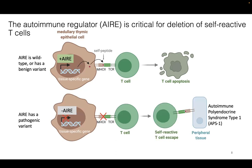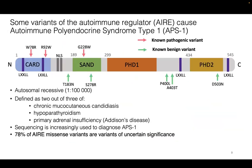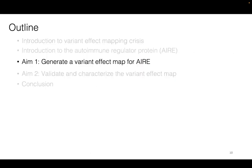If the autoimmune regulator isn't working properly, self-reactive T-cells escape and circulate, causing a disease called autoimmune polyendocrine syndrome. We know some variants that do cause disease — it's a rare monogenic disease. Sequencing is increasingly used to diagnose it because it is monogenic, and we have a dataset of real monogenic benign variants. Of the missense variants annotated in ClinVar, 78% of them are variants of uncertain significance. So it's increasingly important to understand how variants function ahead of clinical presentation, and my aim was to generate a variant effect map for AIRE.